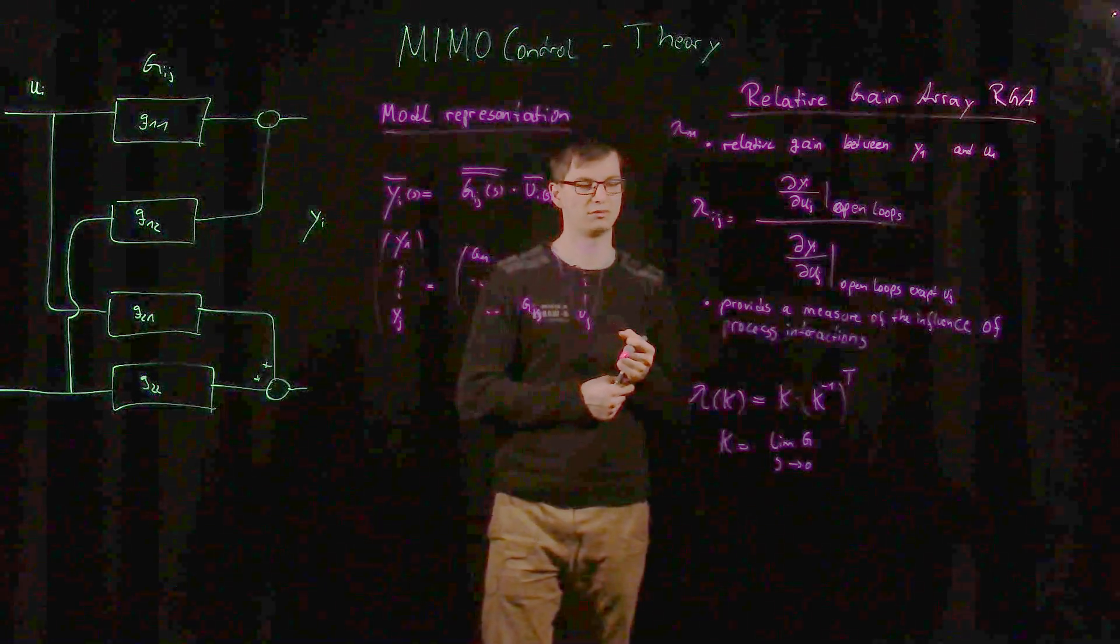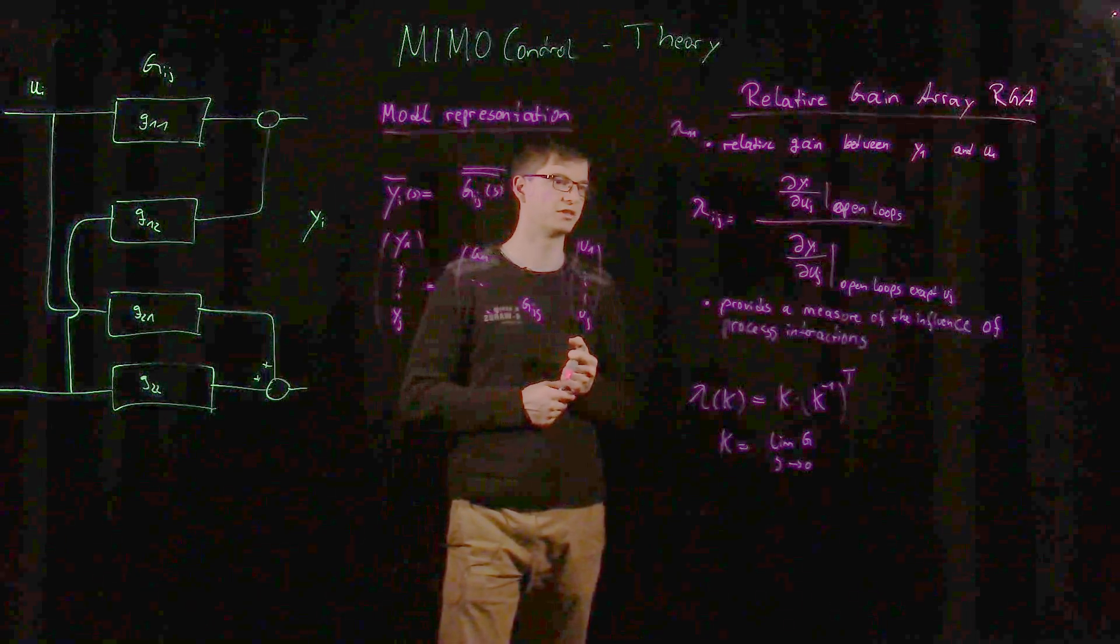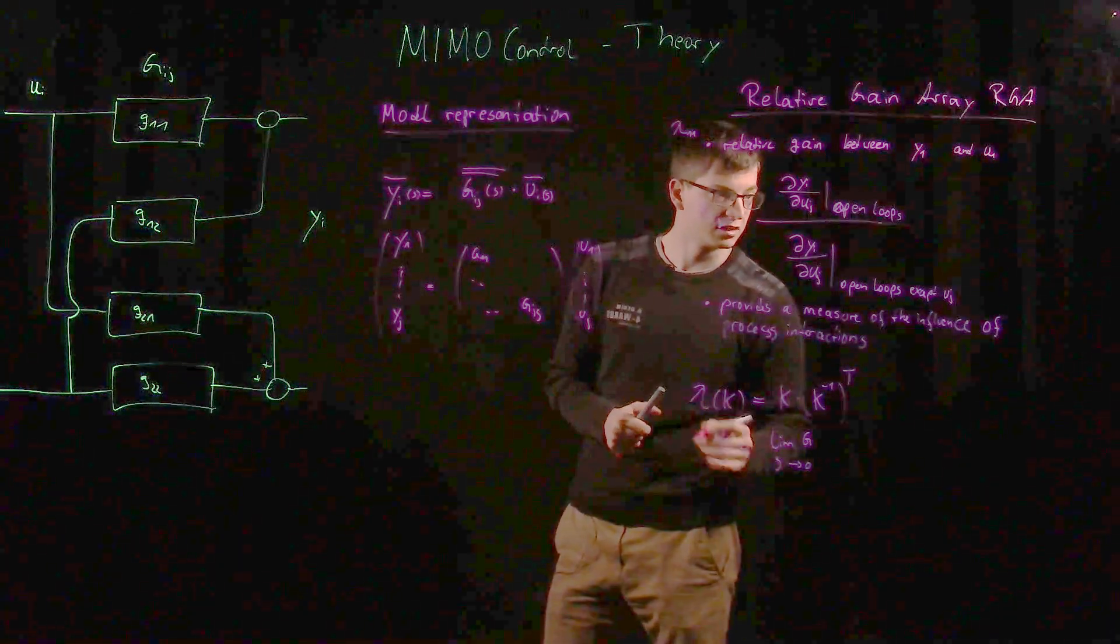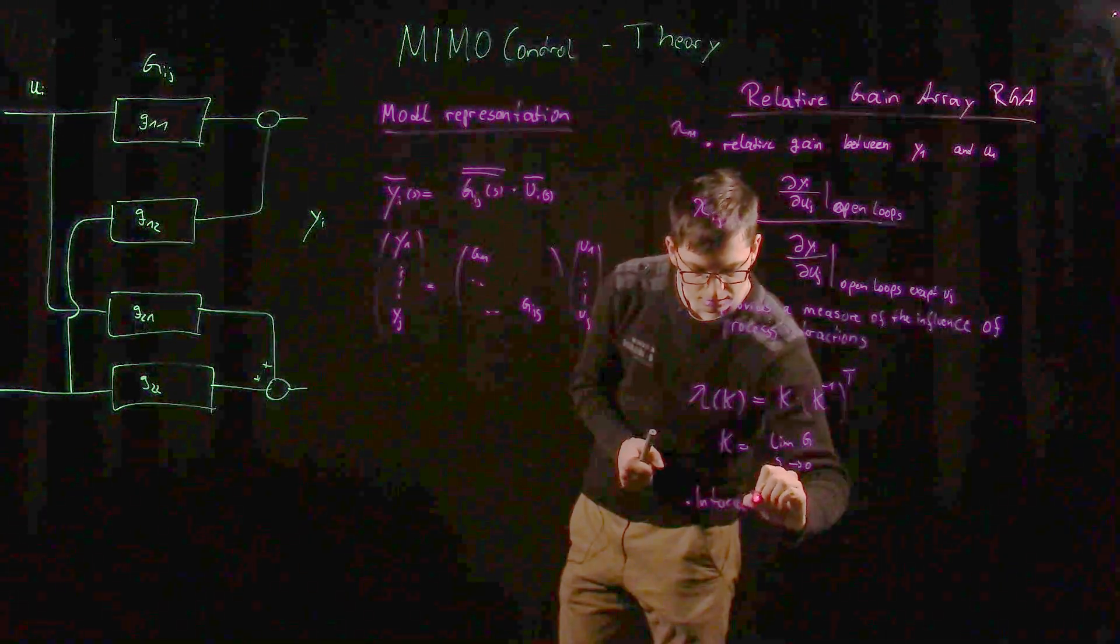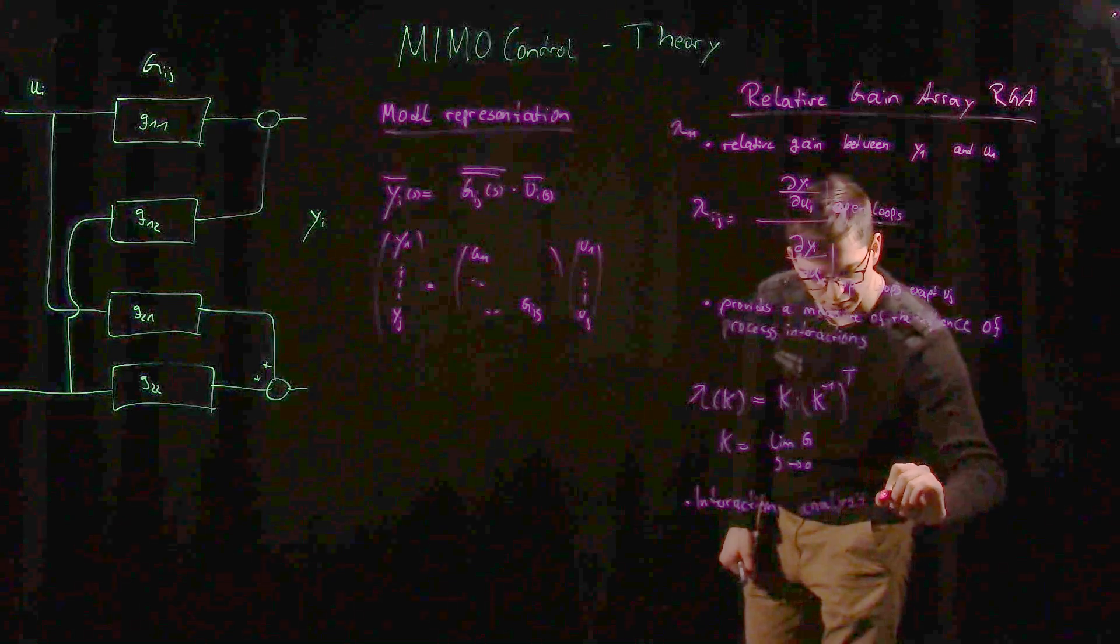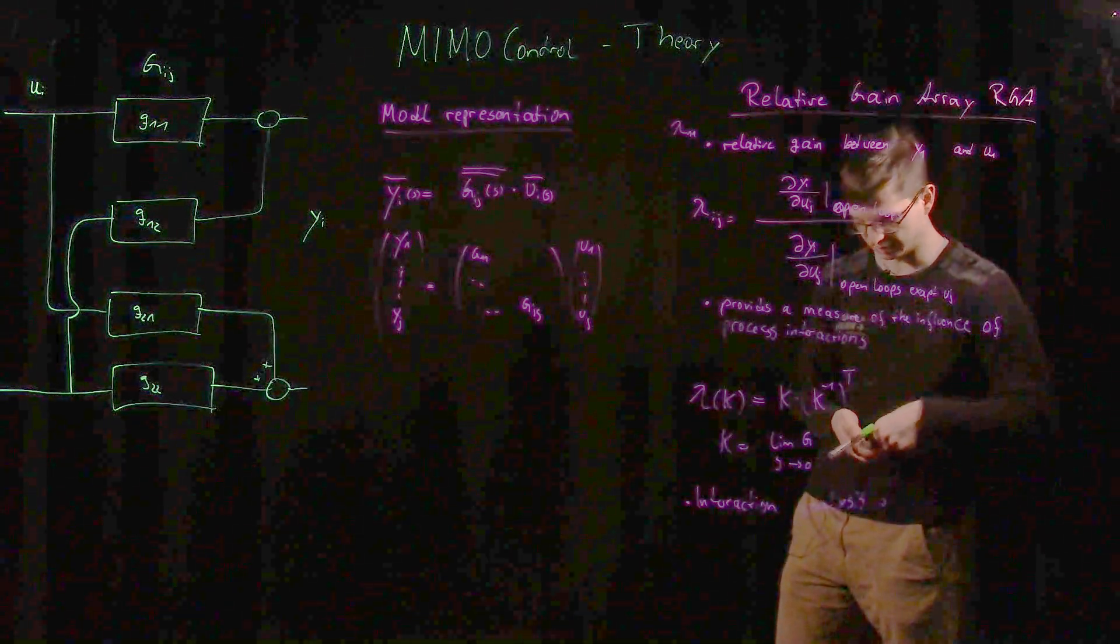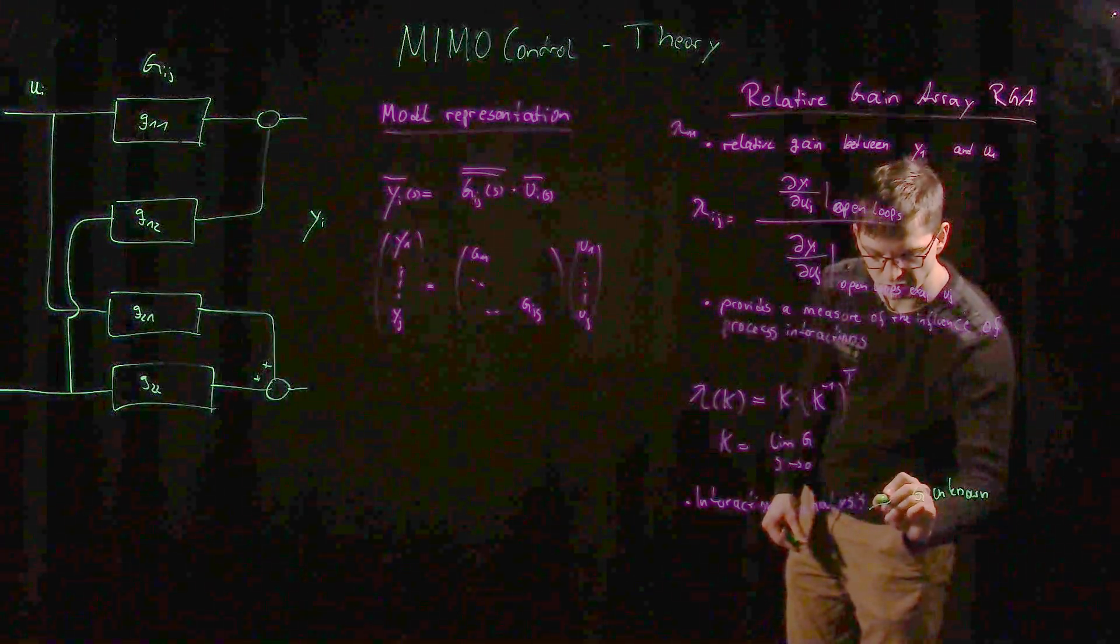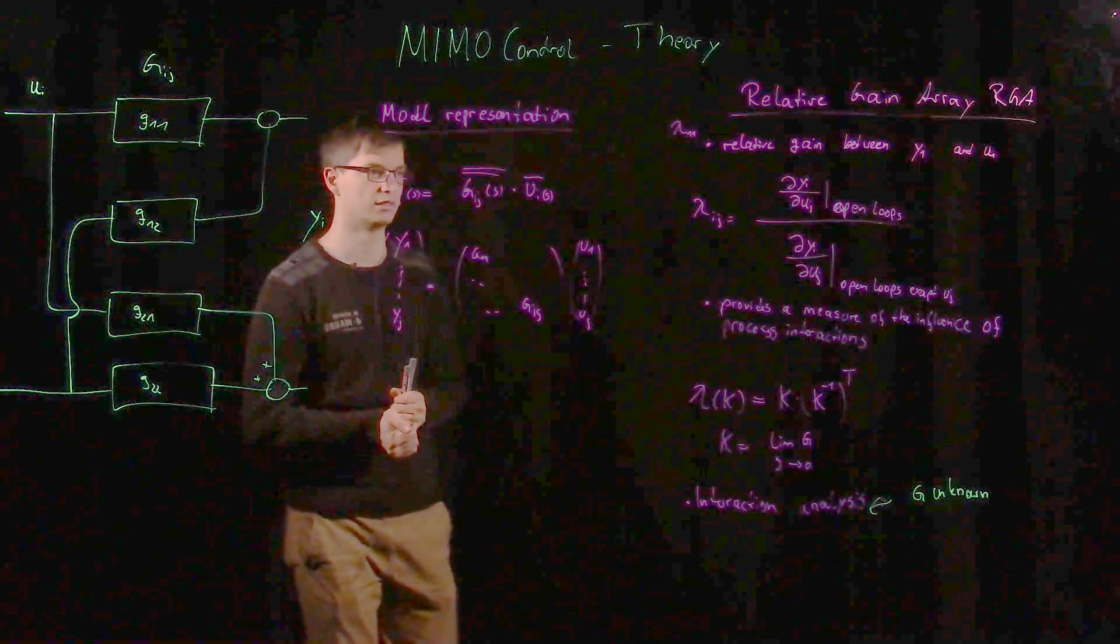And well, what is when those transfer functions are not accessible for us? Then we have to determine this value lambda in a different way, and this is done by interaction analysis. So interaction analysis, this is necessary when this transfer matrix g is not known. It needs to be this way: when g is not known, then we have to perform interaction analysis, and that's what we will do in the next part of this video.